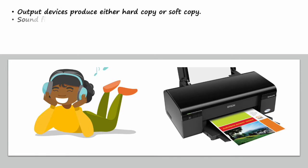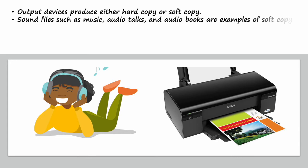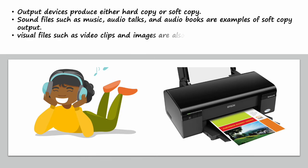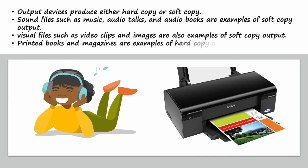Output devices produce either hard copy or soft copy. Sound files such as music, audio talks, and audio books are examples of soft copy output. Visual files such as video clips and images are also examples of soft copy output. Printed books and magazines are examples of hard copy output.